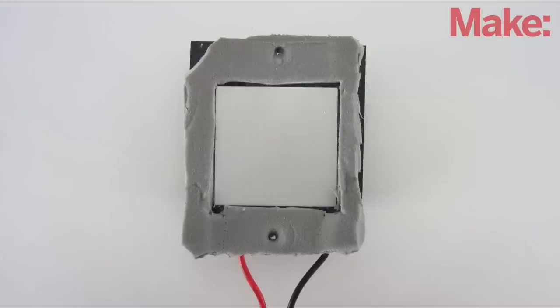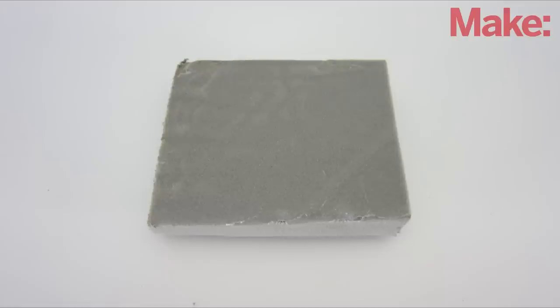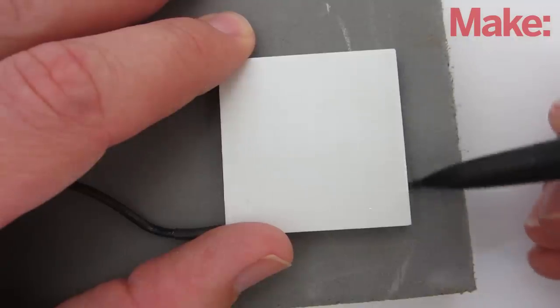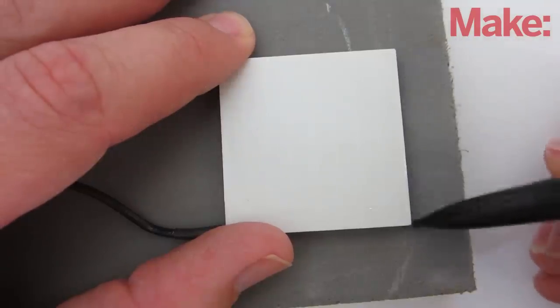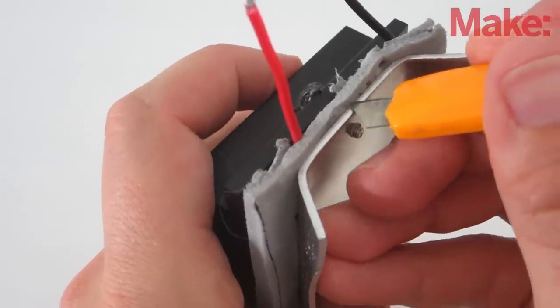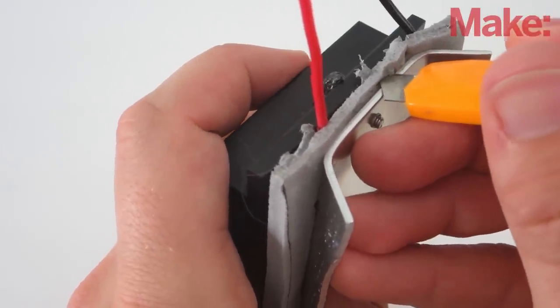To help keep the thermoelectric unit insulated, I added foam around the outside. You want to use heat-resistant foam for this. Trace the outline of the thermoelectric element and cut it out. Then fit the foam in place and trim off any excess around the sides.